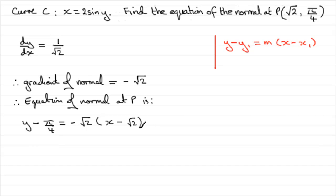Now we need to put this in the form y equals mx plus c. So what I'd want to do is expand the bracket and add pi upon 4 to both sides. So if we do that, we're going to have y equals minus root 2x, and minus root 2 times minus root 2 is plus 2, and then we've got to add the pi upon 4 to both sides, so plus pi upon 4.